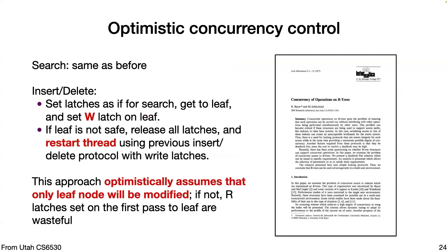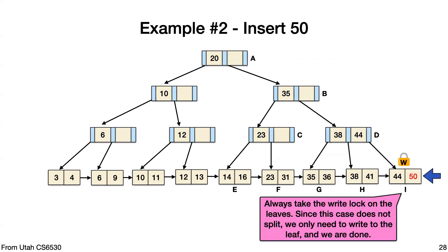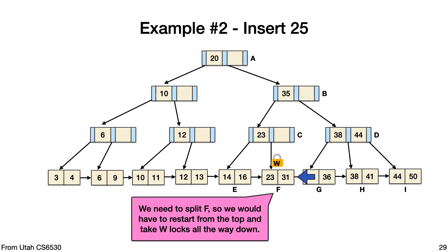For insert and delete, you take the read lock top down until the leaf, then take the write lock. If you can insert into the leaf and finish, great. If not, you start over. For example, inserting 50: take read locks all the way down, take write lock at the leaf, there's space so you just add it and finish. But if inserting 25, we need to split F. We take the write lock on F but can't do the promotion because we don't have locks higher up, so we start again.